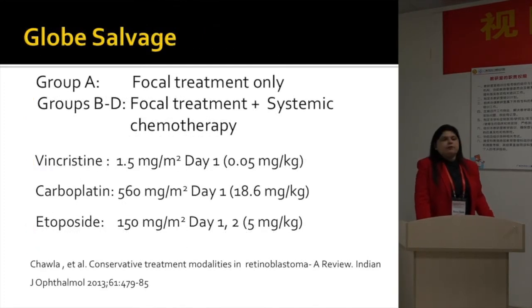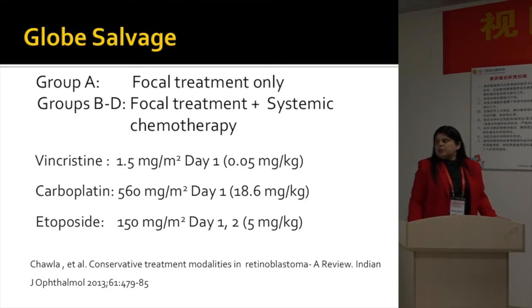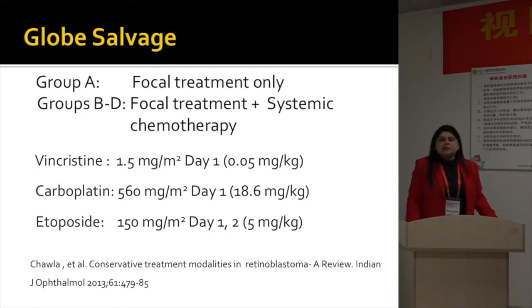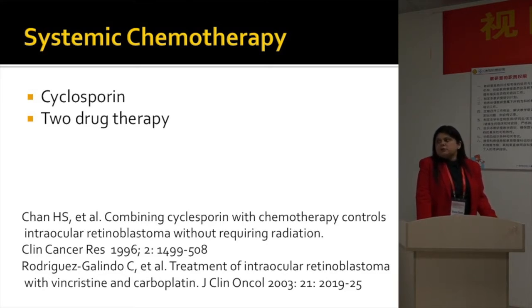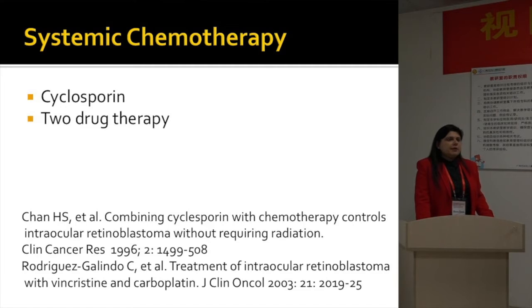Group A tumors we treat only with focal treatment — whether laser, TTT, or cryotherapy. For Group B to D tumors, we use focal treatment and systemic chemotherapy. We use etoposide on two days; that is the protocol at our center. We use VEC as the standard treatment for systemic chemotherapy combined with focal therapy. Some centers also use cyclosporine to overcome resistance, and there are papers showing it controls ocular retinoblastoma well. Because of concerns of leukemia with etoposide, some centers advocate two-drug chemotherapy with vincristine and carboplatin instead of three-drug for less advanced tumors.